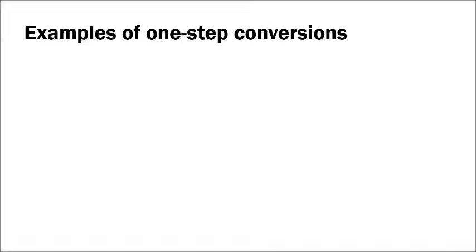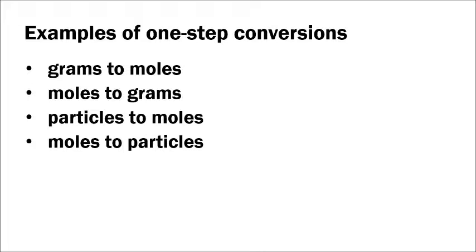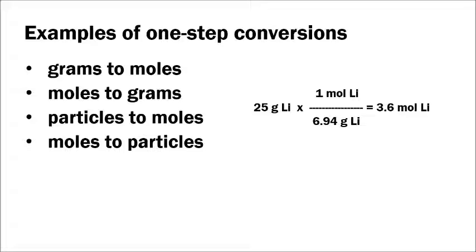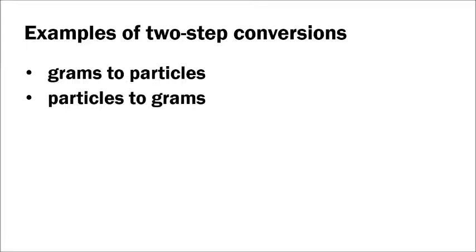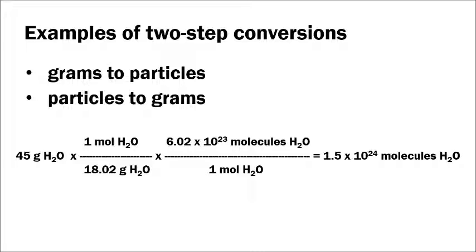Here are some one-step and two-step conversions. For one-step: 25 grams of lithium converts to moles using 6.94 grams of lithium per mole from the periodic table. Another one-step example: 4.7 moles of helium converts to 2.8 × 10²⁴ atoms using Avogadro's number. For a two-step conversion: 45 grams of water converts to molecules using both the molar mass and Avogadro's number, giving 1.5 × 10²⁴ molecules of water.